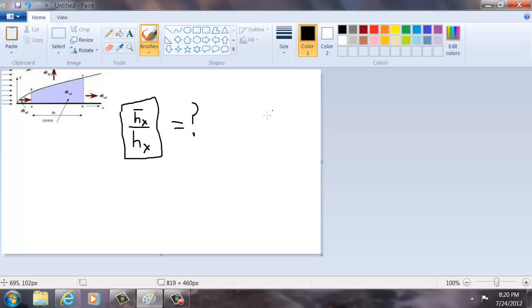Well, we know that h sub x varies as x to the negative one-half. X is coming from the leading edge.